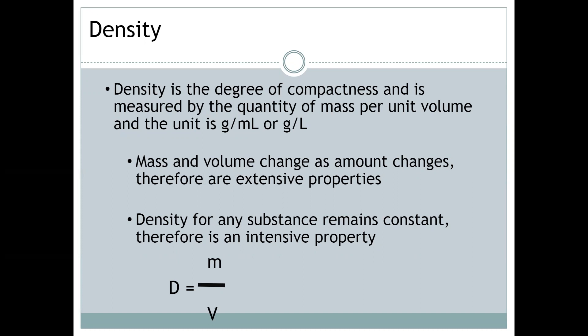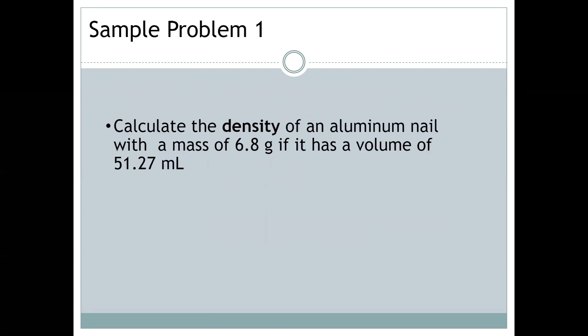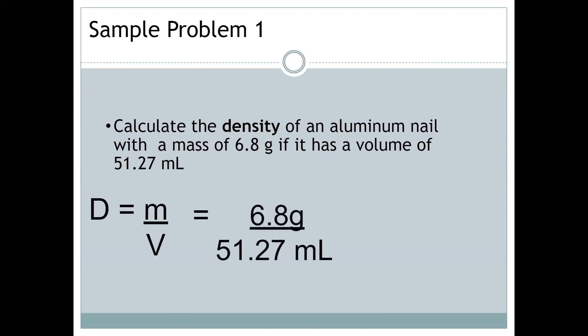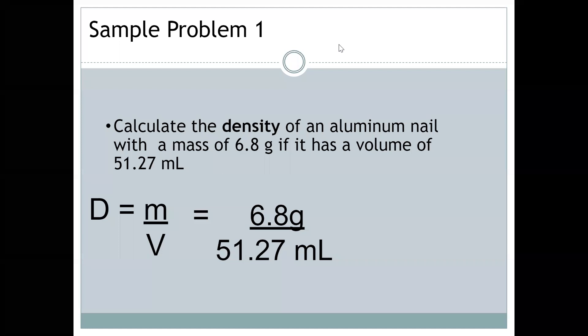The formula for density is density equals mass divided by volume, which you see down below. So if we were going to do a sample problem figuring out the density of an aluminum nail with a mass of 6.8 grams, if it has a volume of 51.27 milliliters, what we would do is we would set that up D = m/V, just like this formula right here.